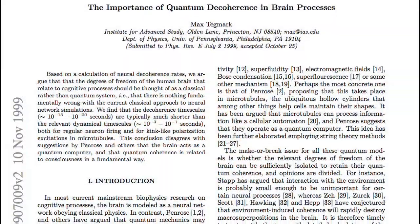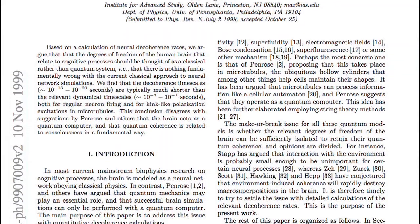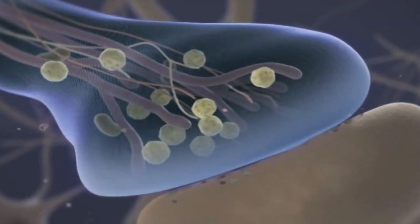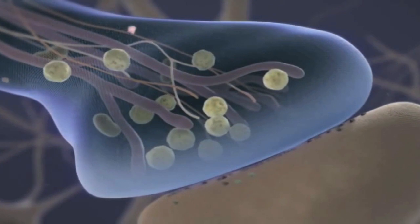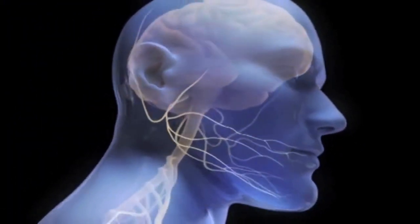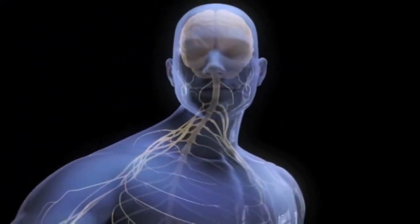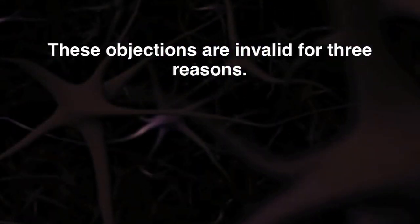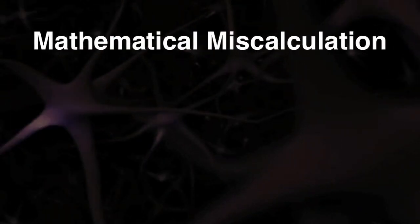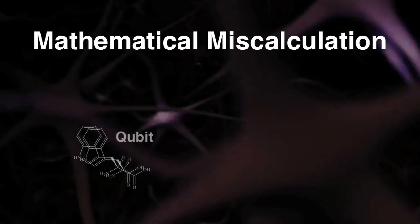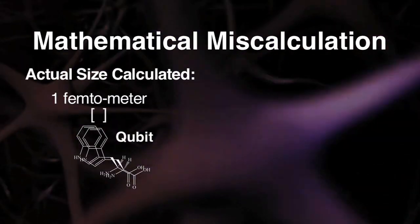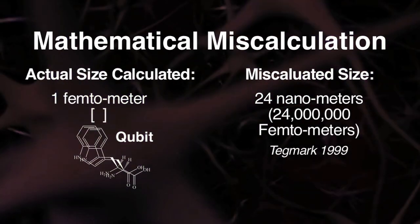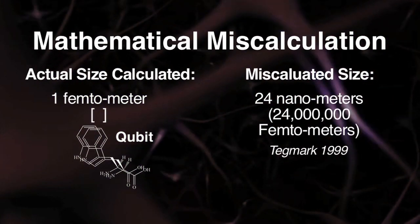When these quantum mind theories first came out, some claimed that the brain is too large and wet for quantum coherence. The random motion of water seems to destroy quantum coherence and produces decoherence. But these objections are invalid for three reasons. First, the objection is based on a mathematical miscalculation assuming the superposition needed to be much larger than what quantum mind models predicted.